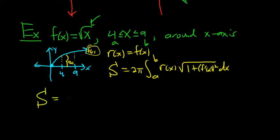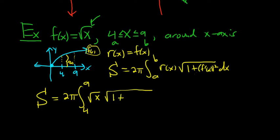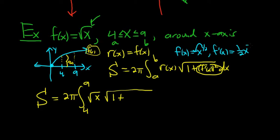So S is equal to 2 pi, integral from 4 to 9, and little r is the square root of x. Then we have the square root of 1 plus the derivative squared. To find the derivative, rewrite f of x as x to the 1/2. Using the power rule, you bring the 1/2 to the front: 1/2 times x to the negative 1/2. You can rewrite this as 1 over 2 square root of x. And then we're squaring this whole derivative.